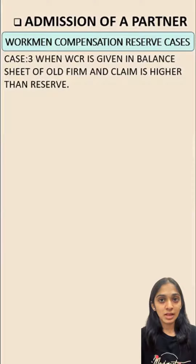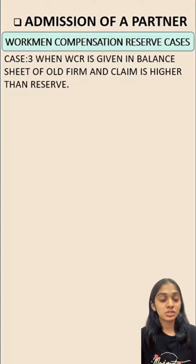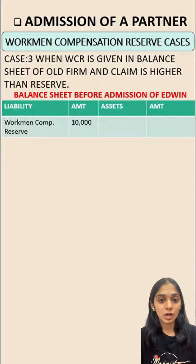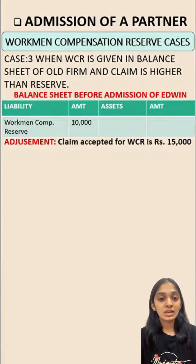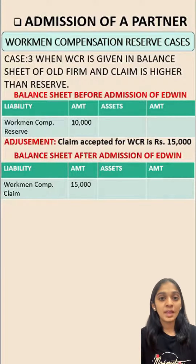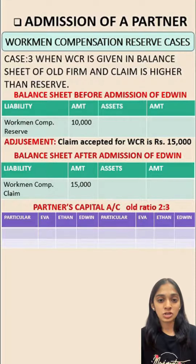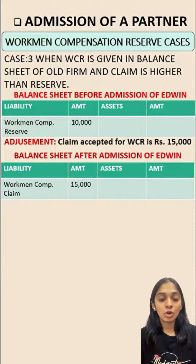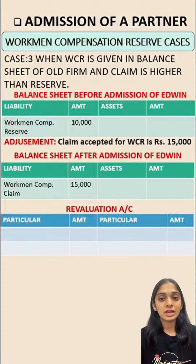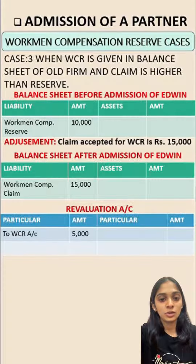The third case is when workman compensation reserve is given but the claim is higher than the reserve. Here, workman compensation reserve is 10,000 and the claim is 15,000. The full claim liability of 15,000 is written on the liability side of the balance sheet. Since no reserve remains, there is no distribution among the partners. The excess liability of 5,000 is written on the debit side of the revaluation account.